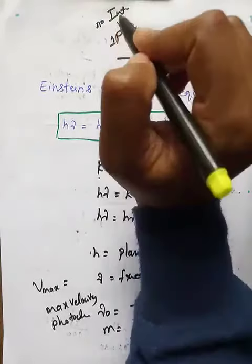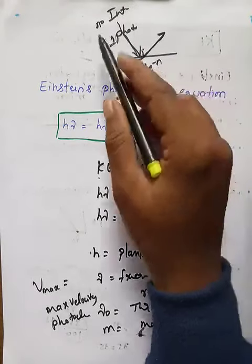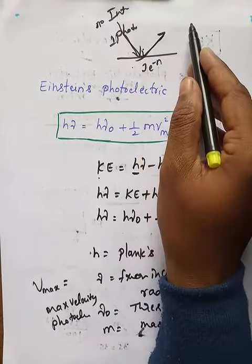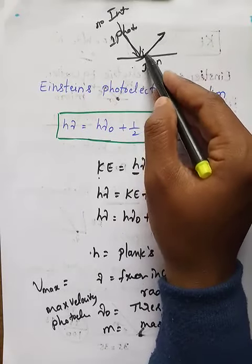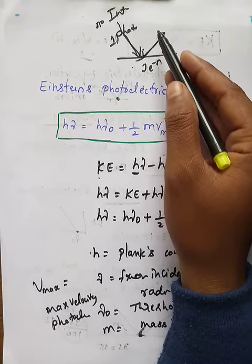As intensity increases, the number of photons emitted per second increases. More photons are absorbed, and hence more electrons are emitted.